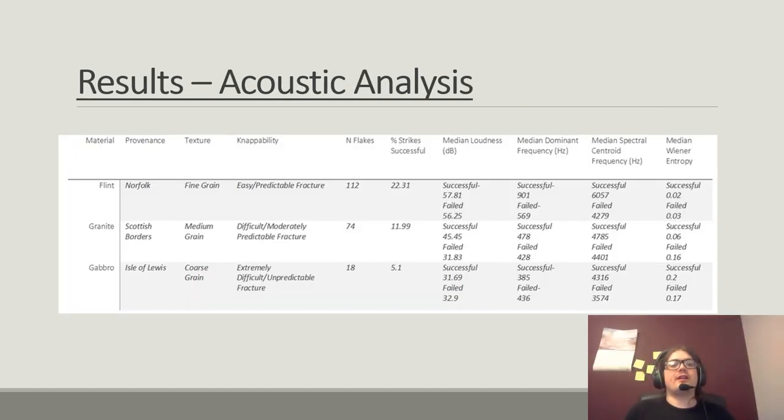Here are the results from experiment 1, the acoustic analysis of strikes on three raw materials. Firstly, we see that flint strikes tend to be louder, higher pitched, in both dominant and spectral centroid frequency, and very clear, approaching a pure tone. Overall, this is in stark contrast to the other two materials. Here, we will focus on differences between materials before exploring the variation that exists between successful and unsuccessful strikes.